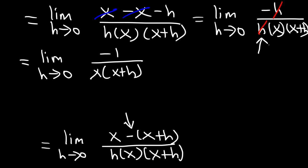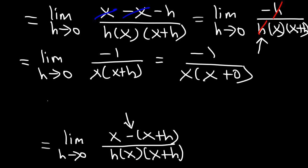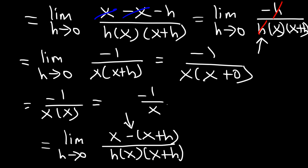As soon as you cancel that h, you can now use direct substitution — we can apply this limit expression. Let's replace h with 0. Now x plus 0 is x. So we have x times x, which is x squared. So the answer is negative 1 divided by x squared. And that is the derivative of 1 over x.